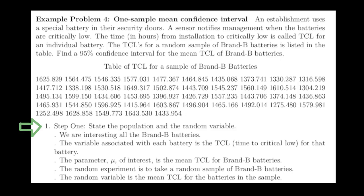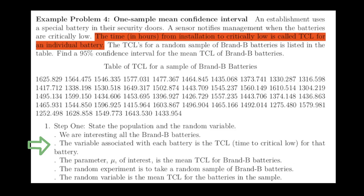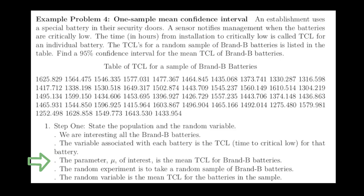Step one has to do with getting to know the population, the population parameter, the sample, and the random variable. In this case, we're interested in all the brand B batteries. The variable associated with each of those batteries is something called the TCL, or the time from installation to critical low for these batteries. The population parameter that we're interested in is the average TCL for brand B batteries. The random experiment that we're going to conduct is take a random sample of brand B batteries.